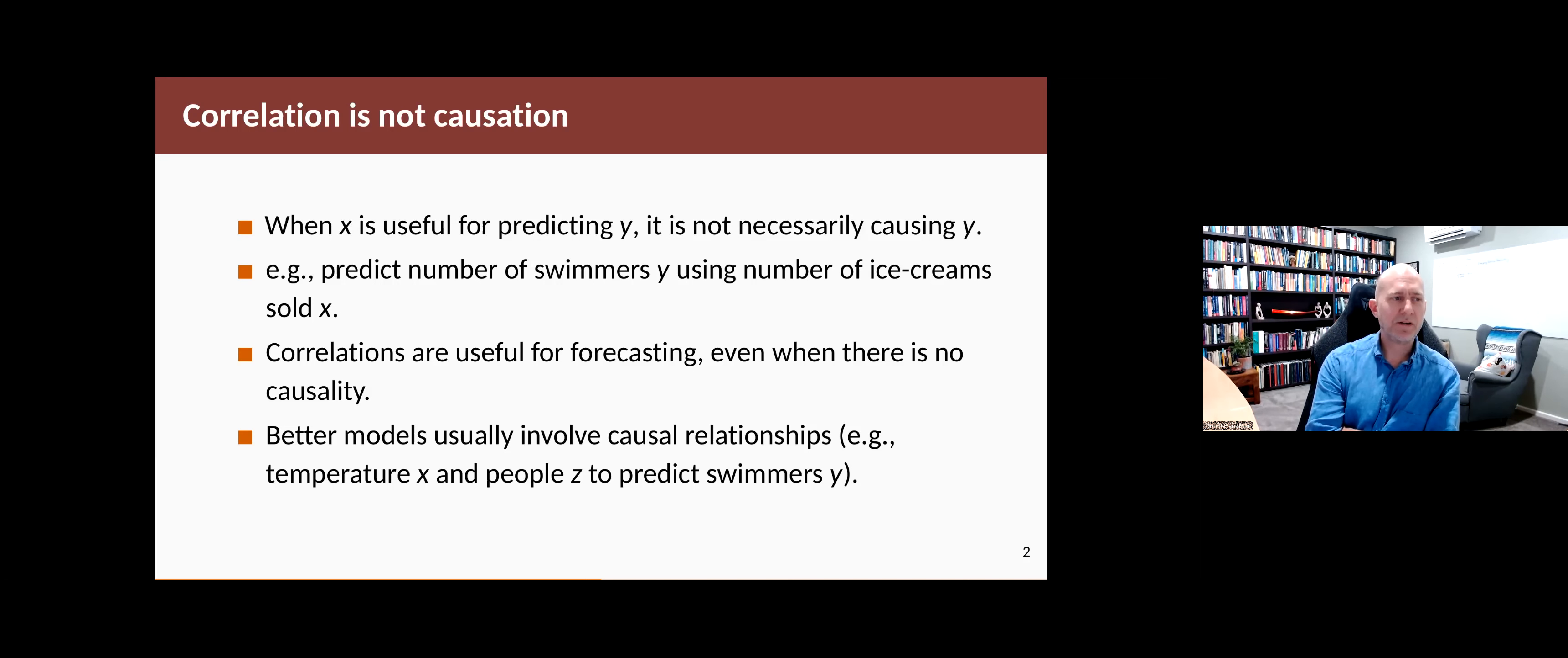Let's take an example. Suppose you're working for a swimming pool and you're trying to predict the number of swimmers that use your pool every day, and you notice that it's highly correlated with the number of ice creams sold. You could build a model that predicts the number of swimmers based on the number of ice creams. Of course, you have a problem of how do you predict the number of ice creams sold, but it is a viable model, even though ice creams are not causing the swimmers. So correlations can be useful for forecasting, even when there's no causation going on.